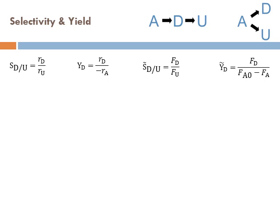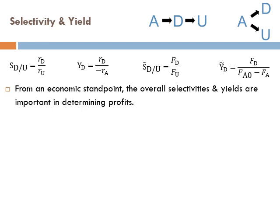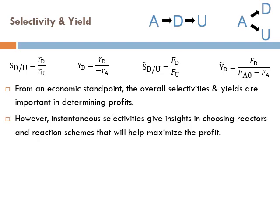From an economic standpoint, overall selectivities and yields are important in determining profits, because when you sell, you sell according to quantity — the number of moles. However, instantaneous selectivities give insights for choosing reactors and reaction schemes that will help maximize profit. If you want to calculate profit, look at overall selectivity and yield. If you want to know how to maximize overall production of the desired product, look at instantaneous selectivity.